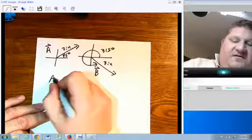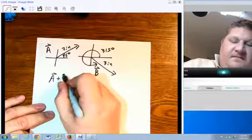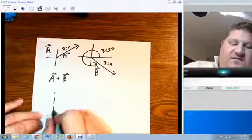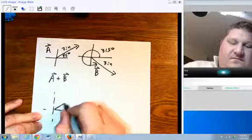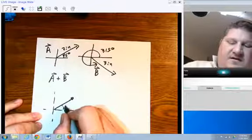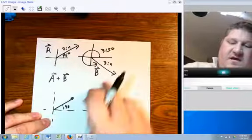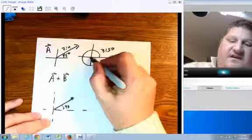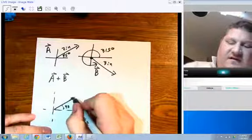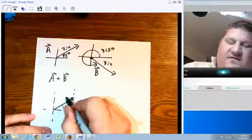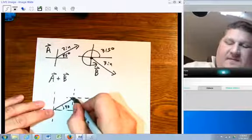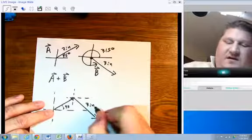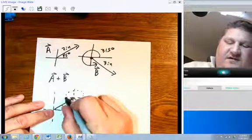If I attempt to put them together, to find vector A plus vector B, I need to take this vector that I start with, being careful not to change its size or direction, and slide it here such that the tail of the second vector is at the head of the original vector. And I get this number - 3 inches at 315 degrees.